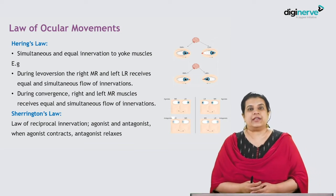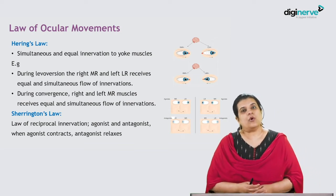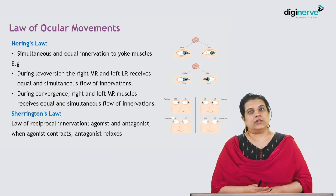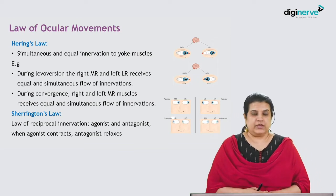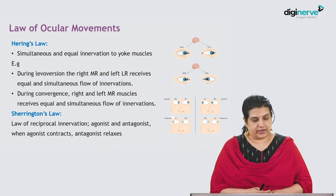As per Sherrington's law, it is the law of reciprocal innervation for agonist and antagonist. When the agonist contracts, the antagonist relaxes.